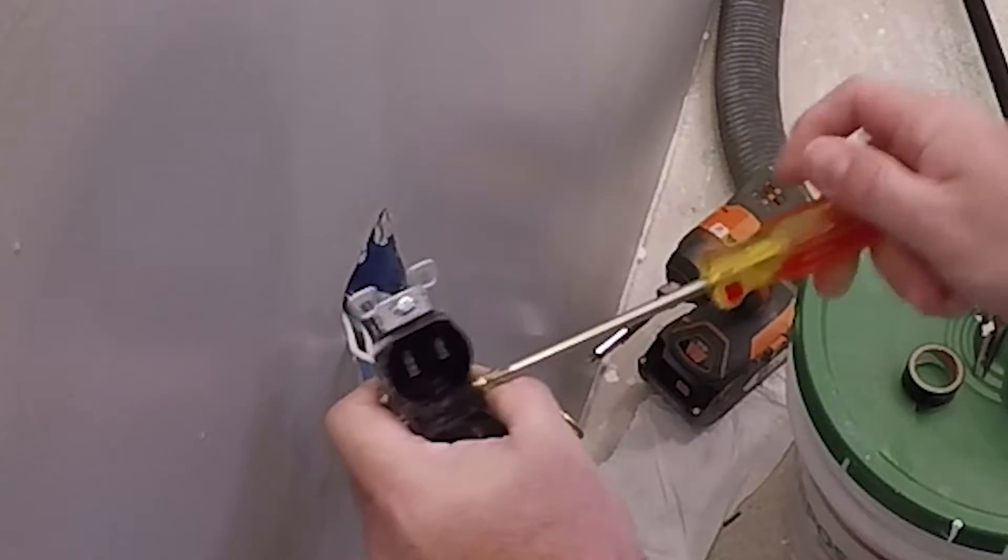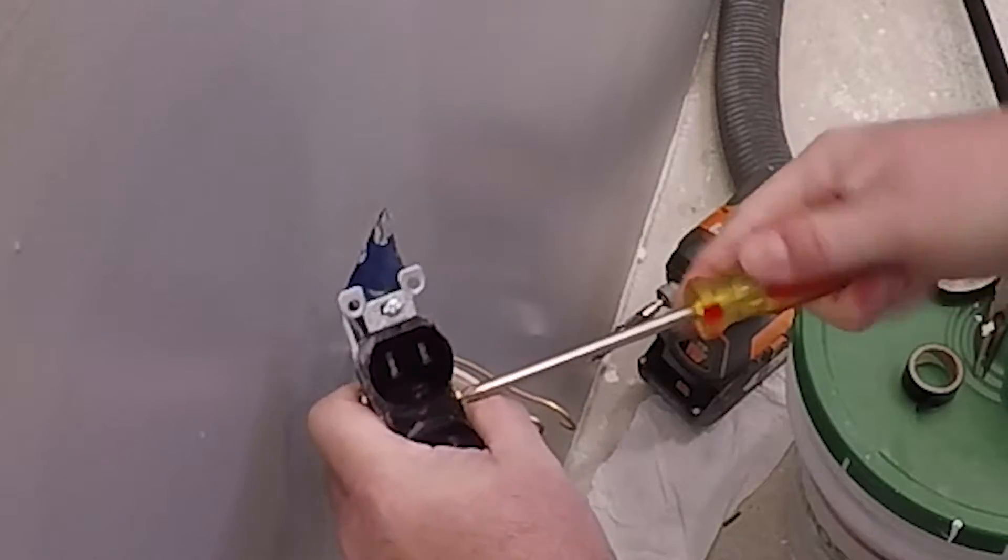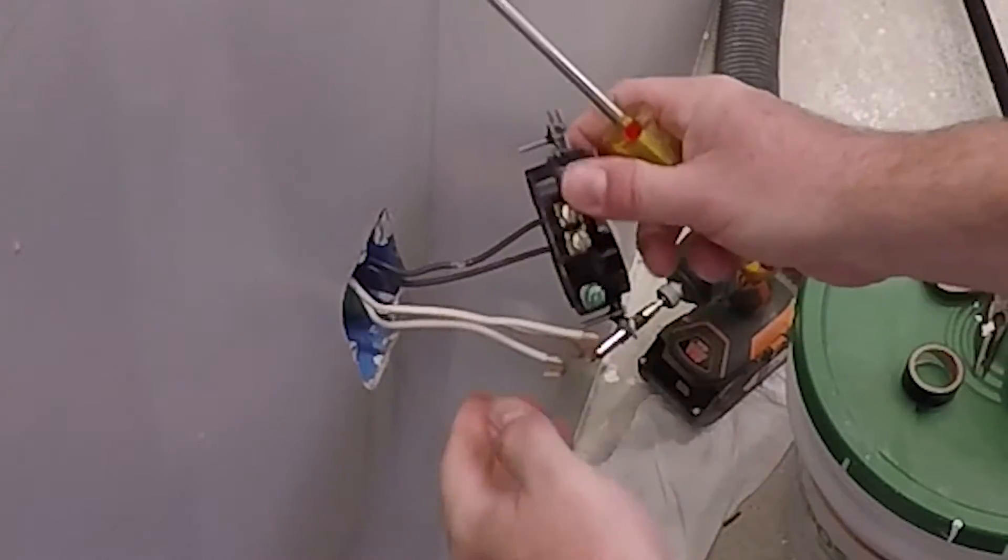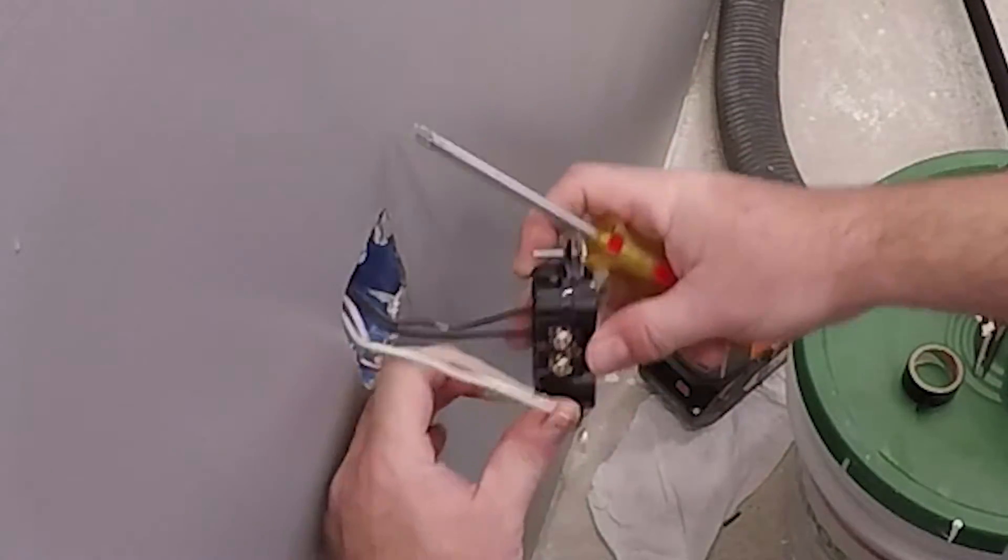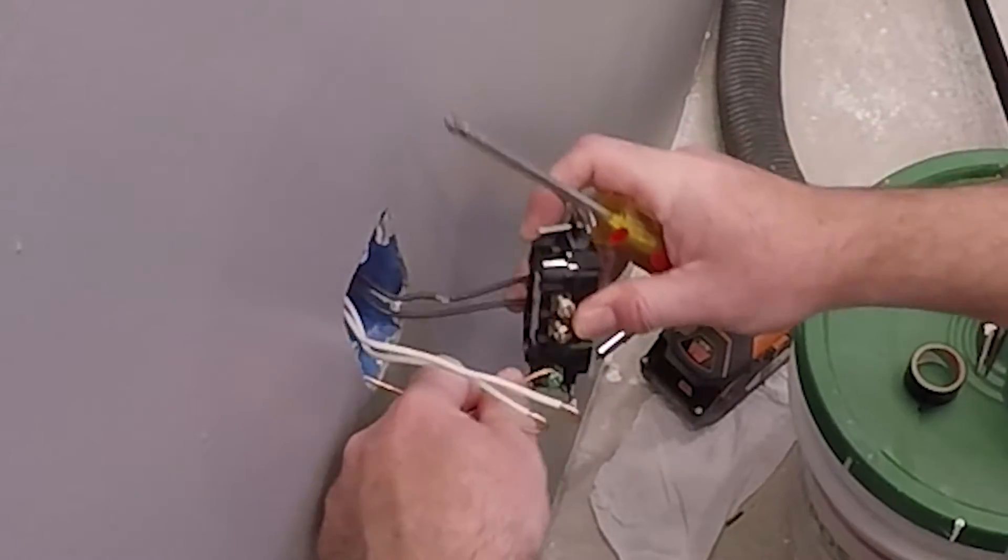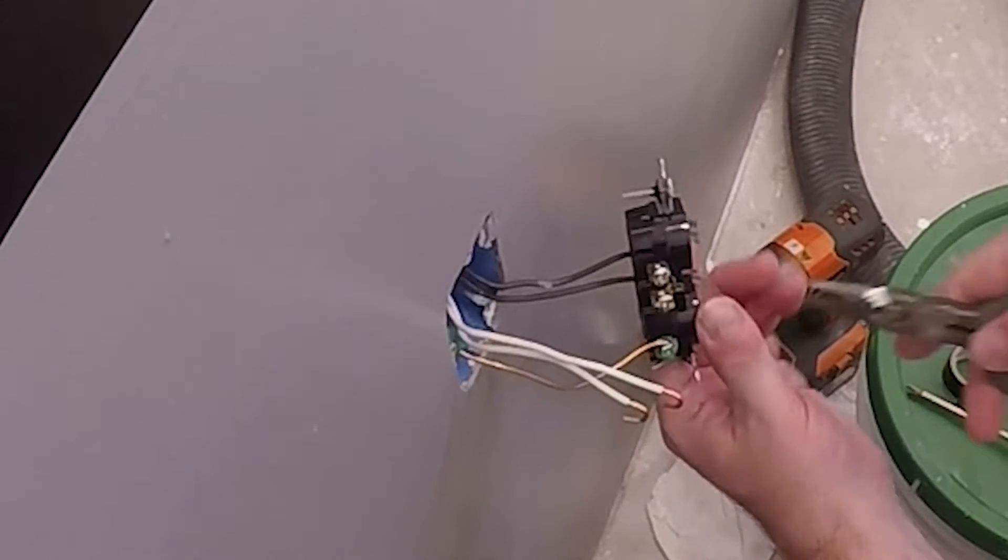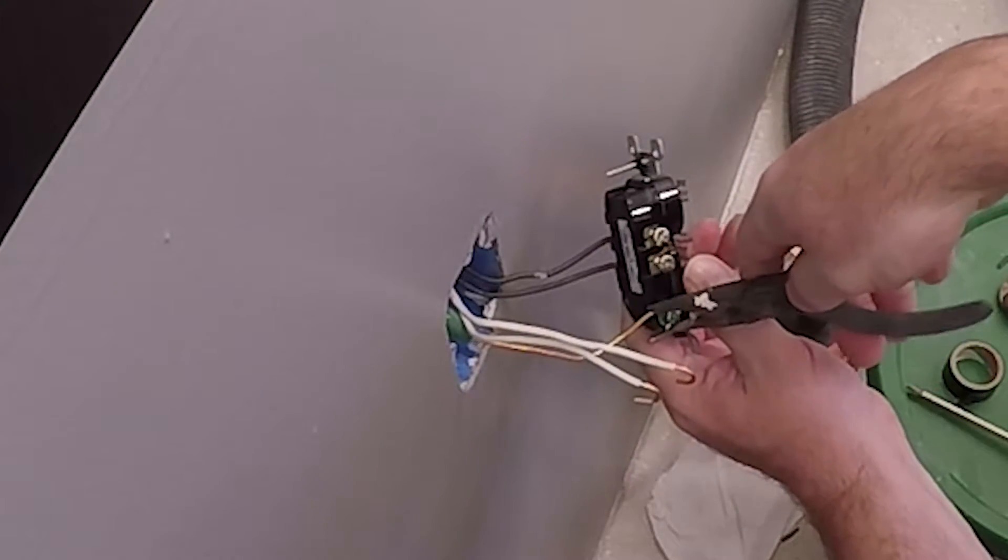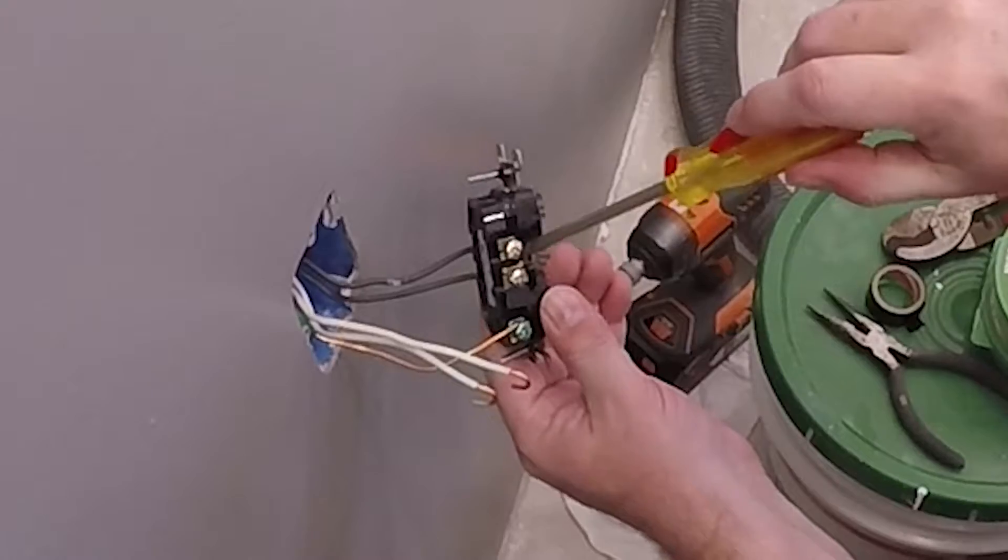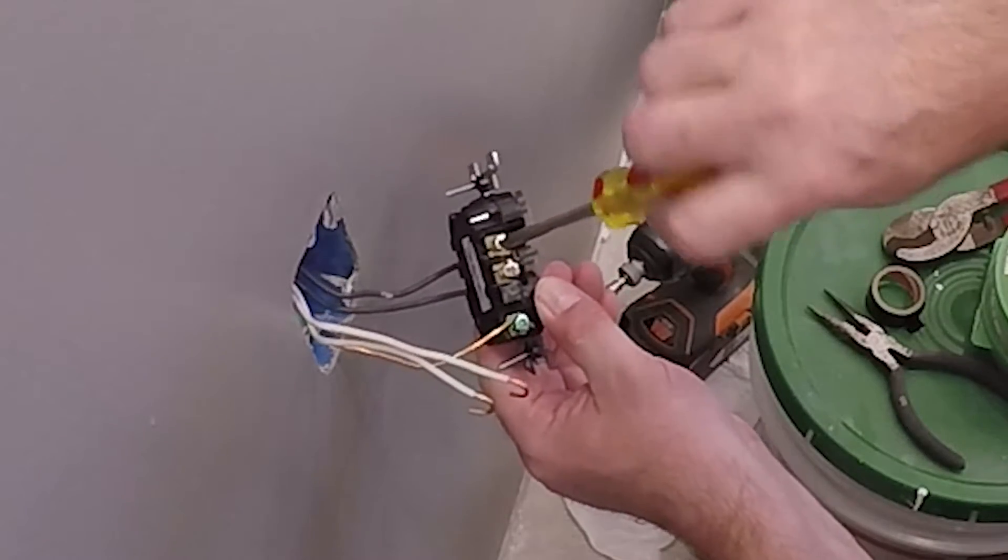Now, the hot gets connected to the smaller side, to the right side, to the brass colored screw. The hot is the black wire. White is the neutral, the bigger connector. Ground is the small middle connector. You see here I'm connecting the ground now. This is where I'm pinching the wire on the lug.